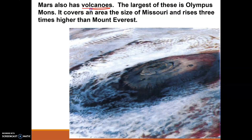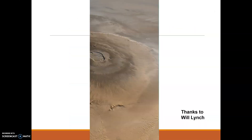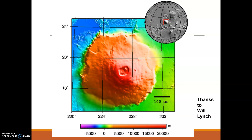Mars also has many volcanoes, the largest being Olympus Mons. It covers an area the size of Missouri and rises three times higher than Mount Everest, which is the tallest mountain on Earth. So imagine that protruding three times higher on Mars. We can see from the image that this mountain is over 20,000 meters tall at the highest point on our topographical map.